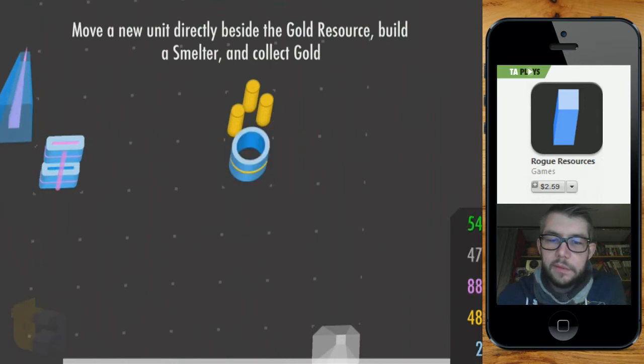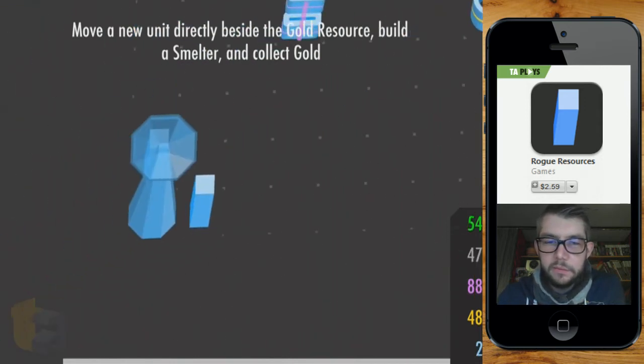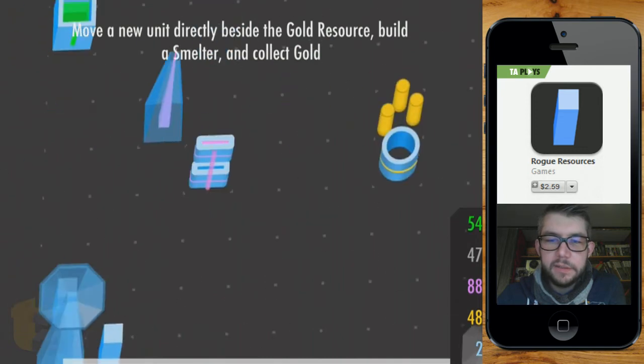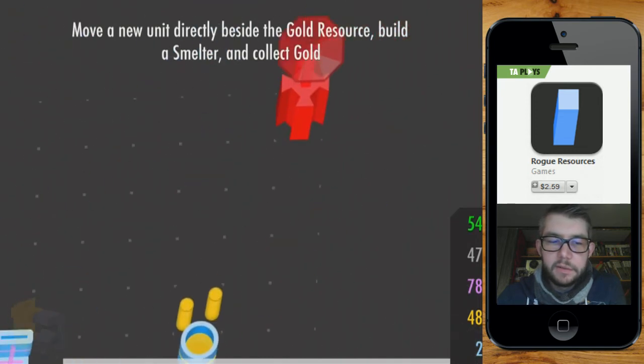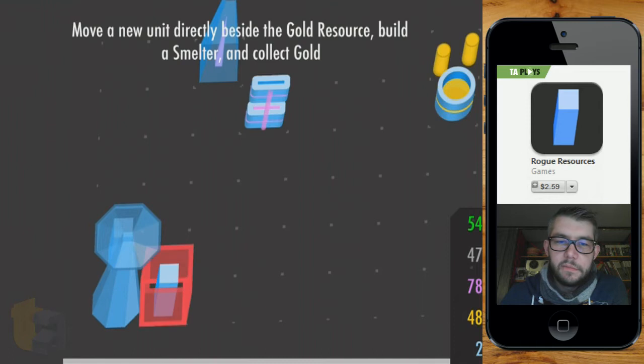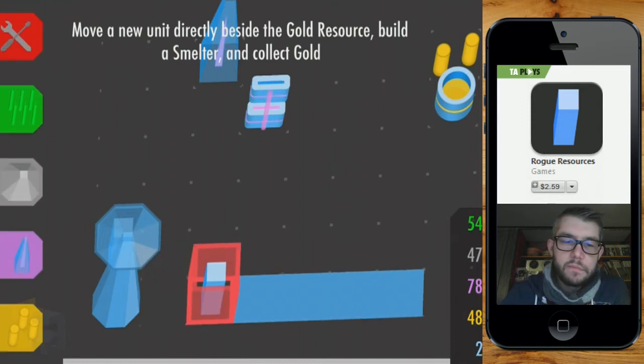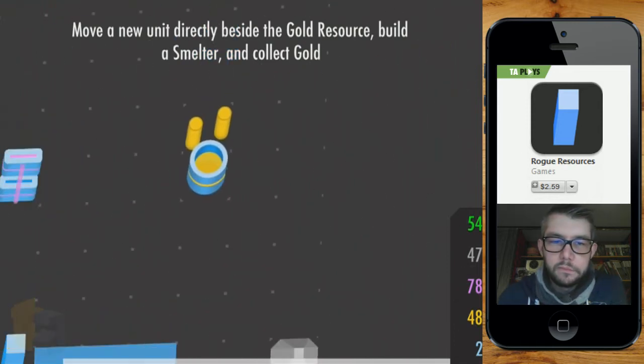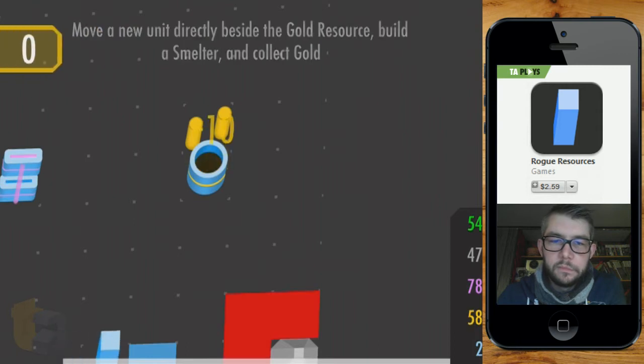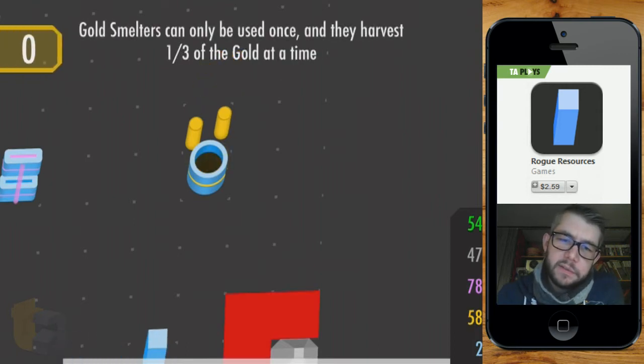Alright. Now we're clicking gold. The question is where is all this going? Gold smelters can only be used once and they harvest one third of the gold at a time.